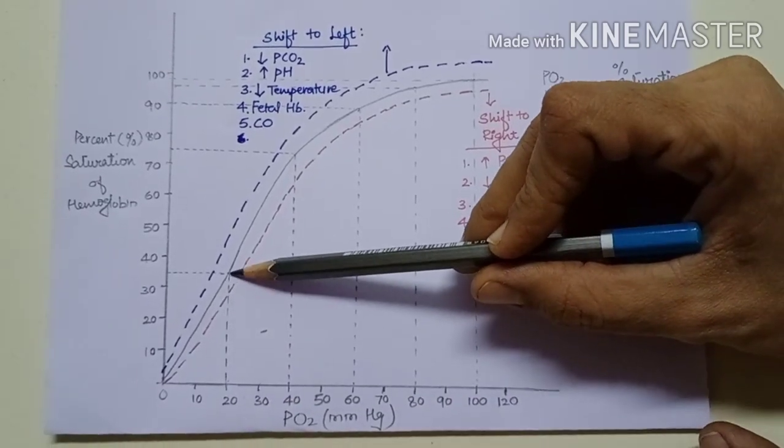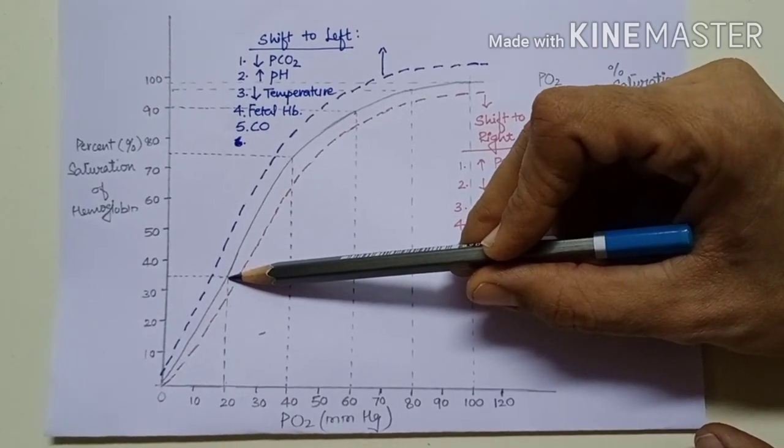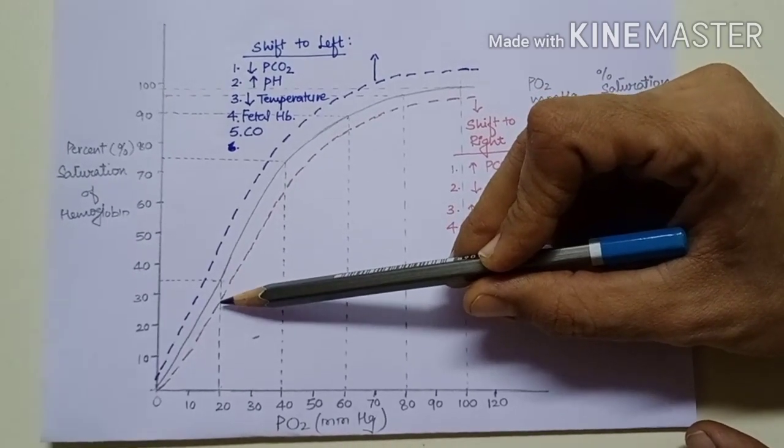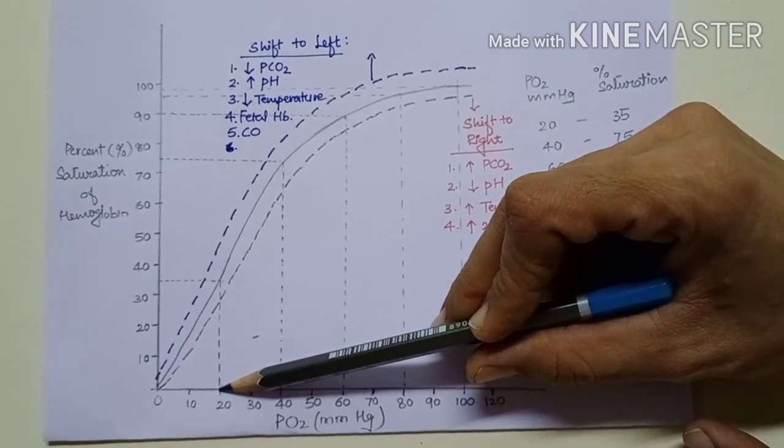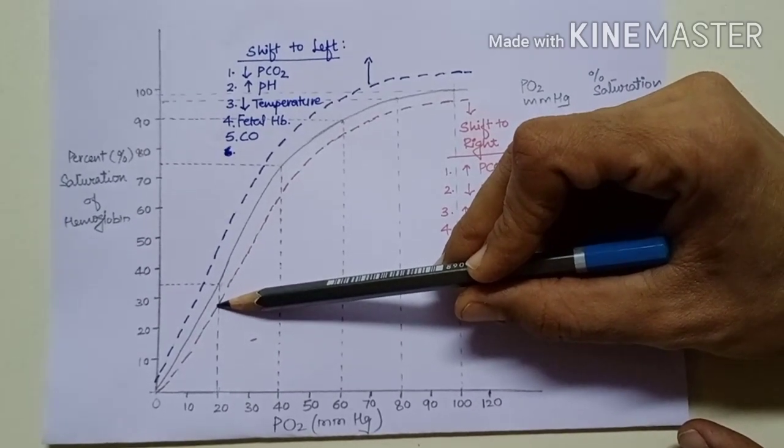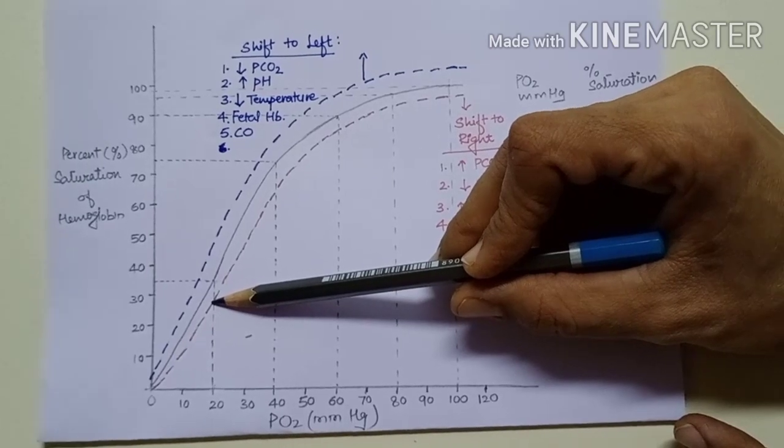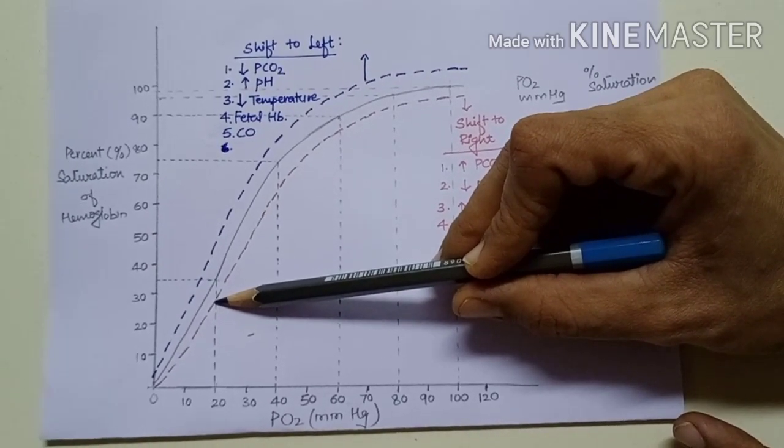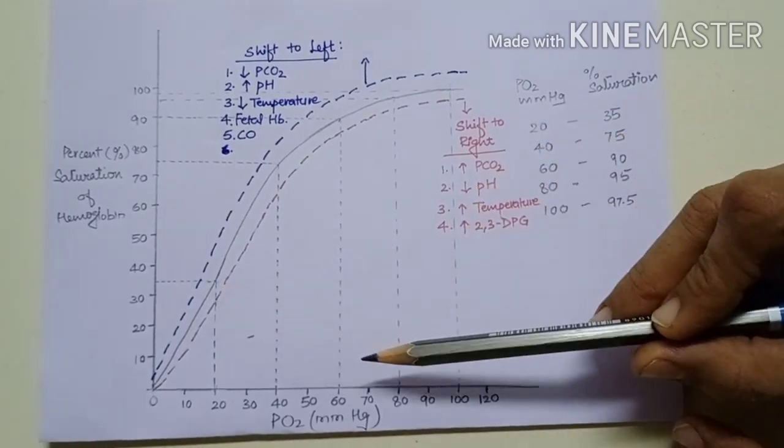But here you can see, whenever there is a shift to right, at the same PO2 of 20 mmHg, percentage saturation is less than 35%. That shows release of oxygen from hemoglobin, which means decreased affinity of oxygen.